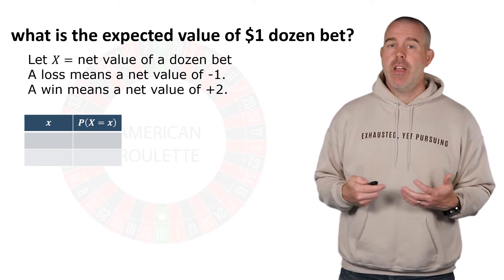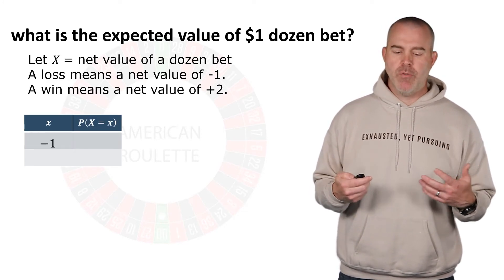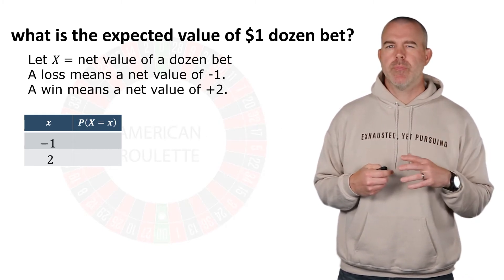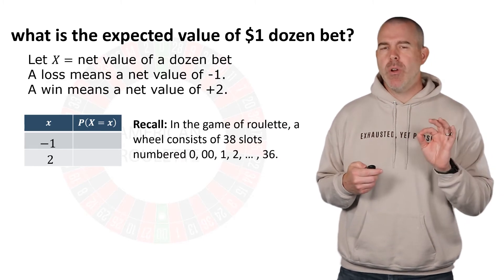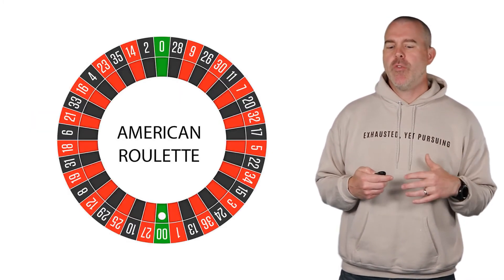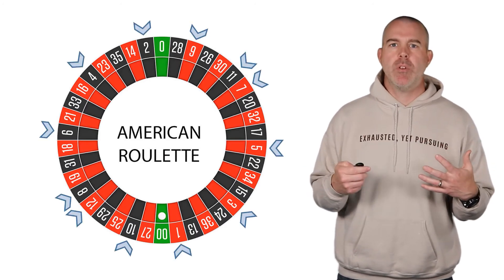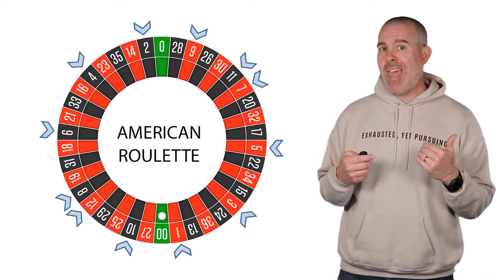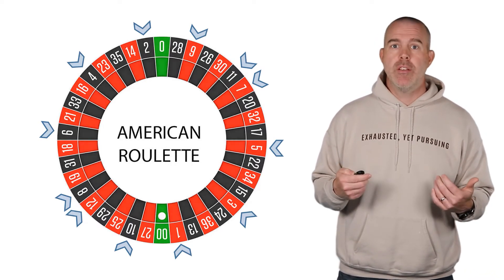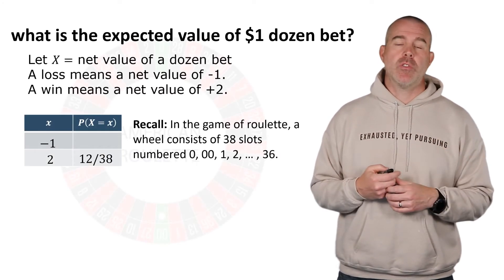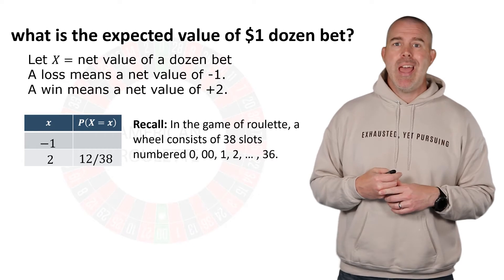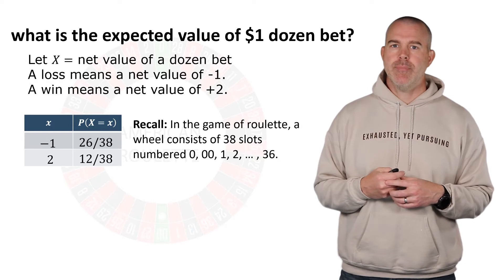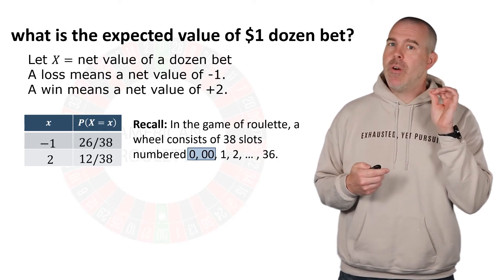Let's make a table. We'll get our probability distribution, so we can have either negative one or two. Let's look at that roulette wheel. So remember, the wheel has zero, double zero, then one through 36. So if we're making a dozen bet, let's just for sake of example, let's say we're looking at the numbers one through 12. Well, that means there are 12 out of a total of 38 ways to win. So on our table, then 12 out of 38 goes for the probability of having a net value of two. And then negative one is going to be everything else. So that's going to be 26 out of 38.